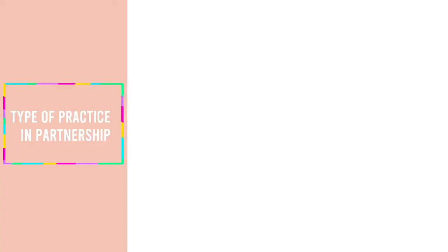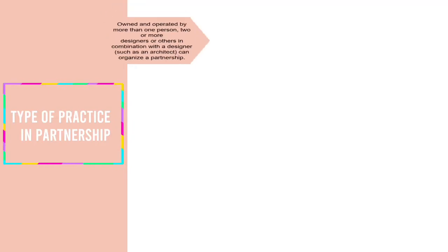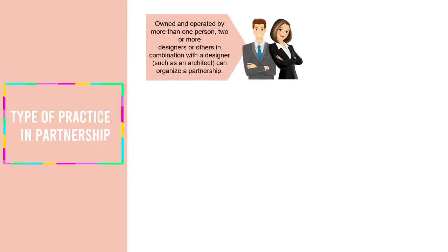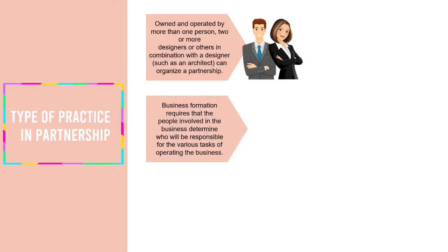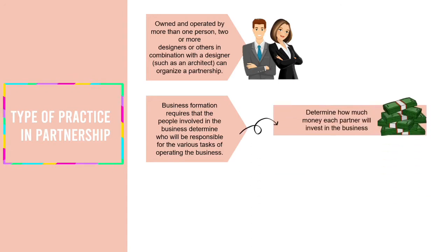Now let's take a look at types of practice in partnership. There are three types. Number one: owned and operated by more than one person — two or more designers, or others in combination with designers such as an architect, can organize a partnership. Number two: business formation requires that the people involved determine who will be responsible for the various tasks of operating the business.